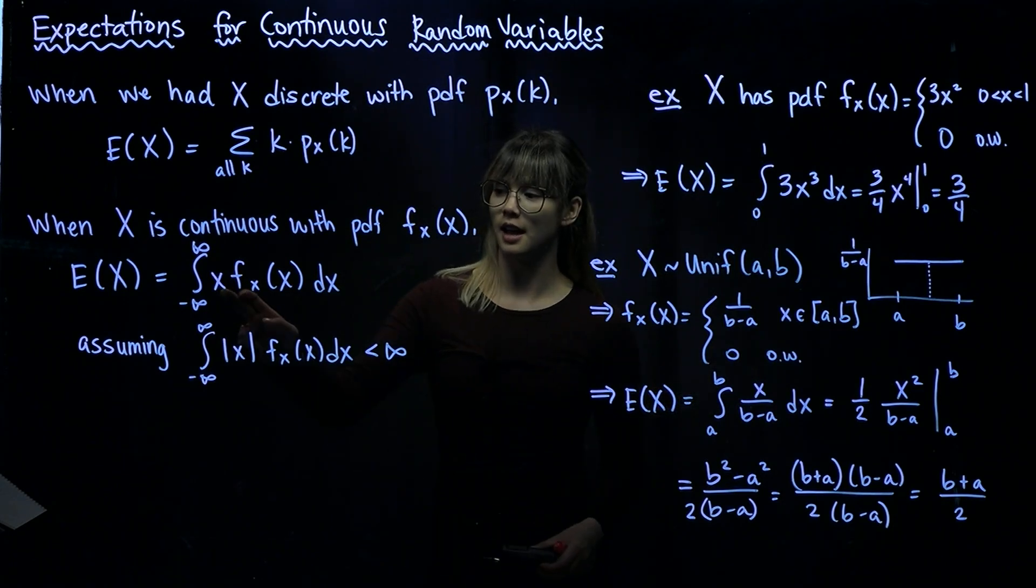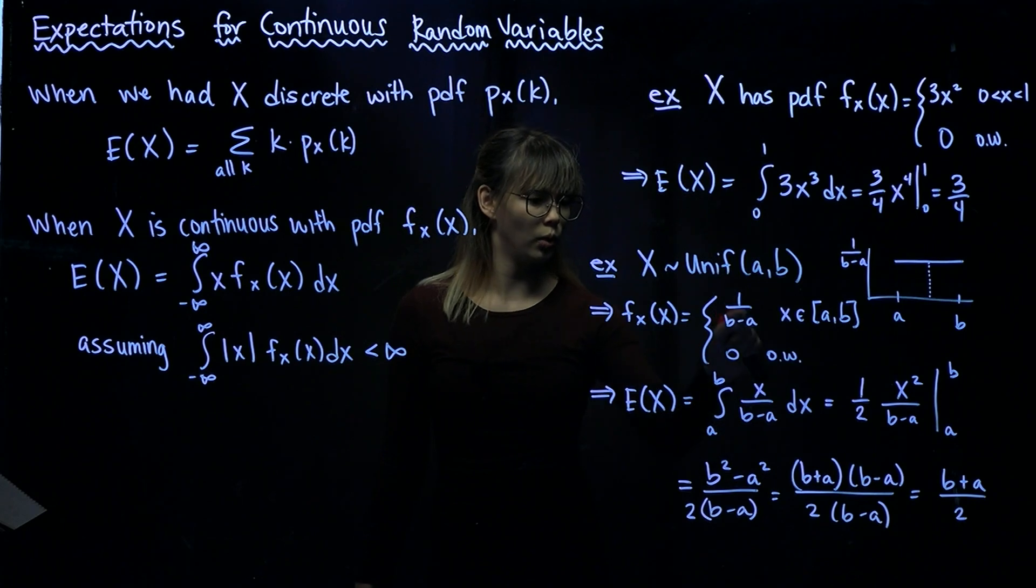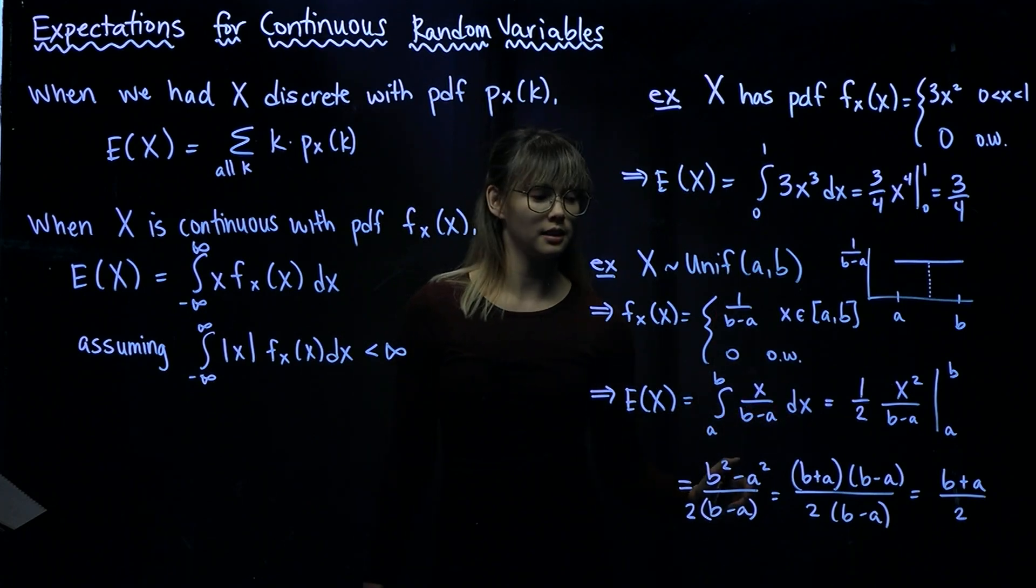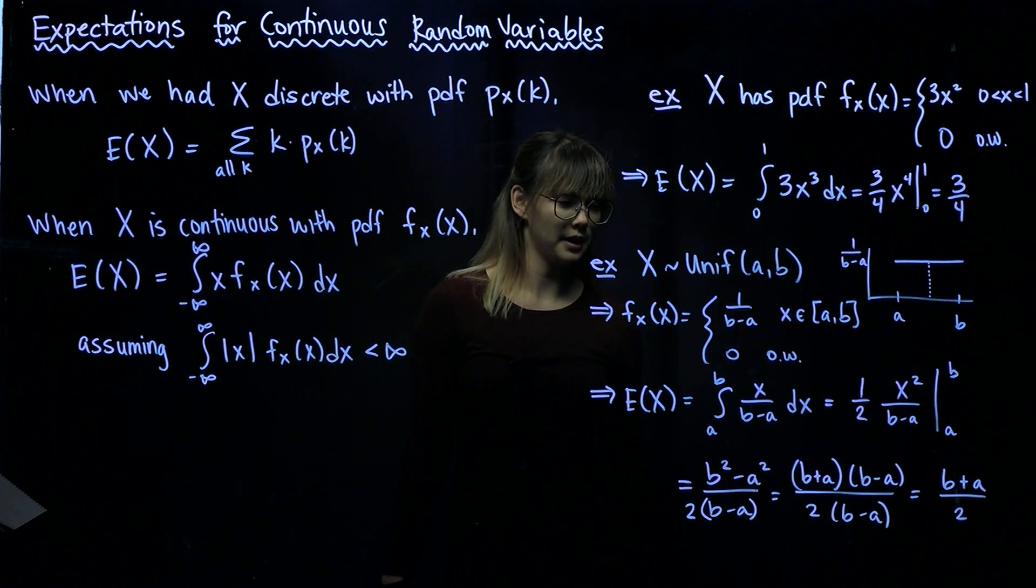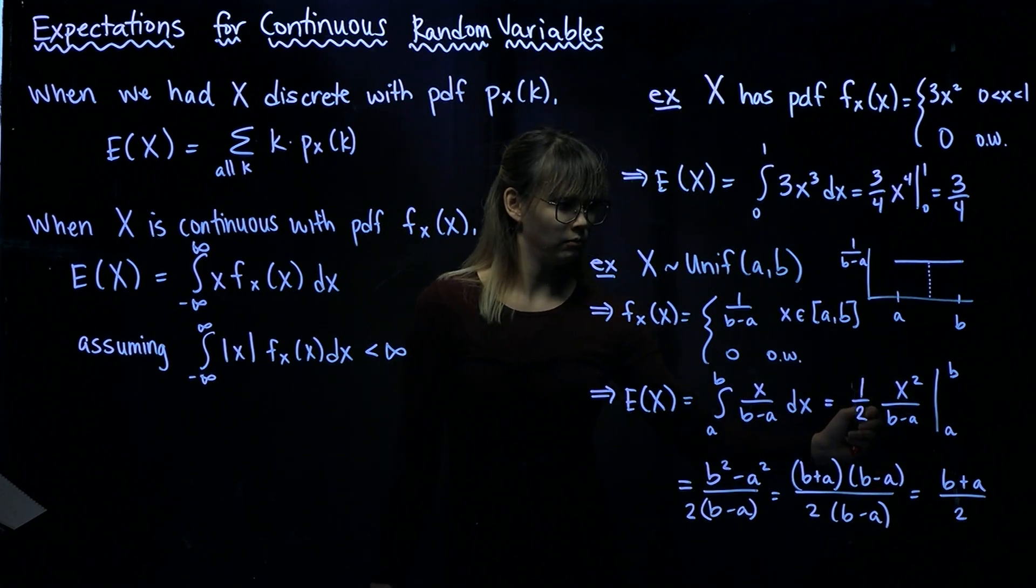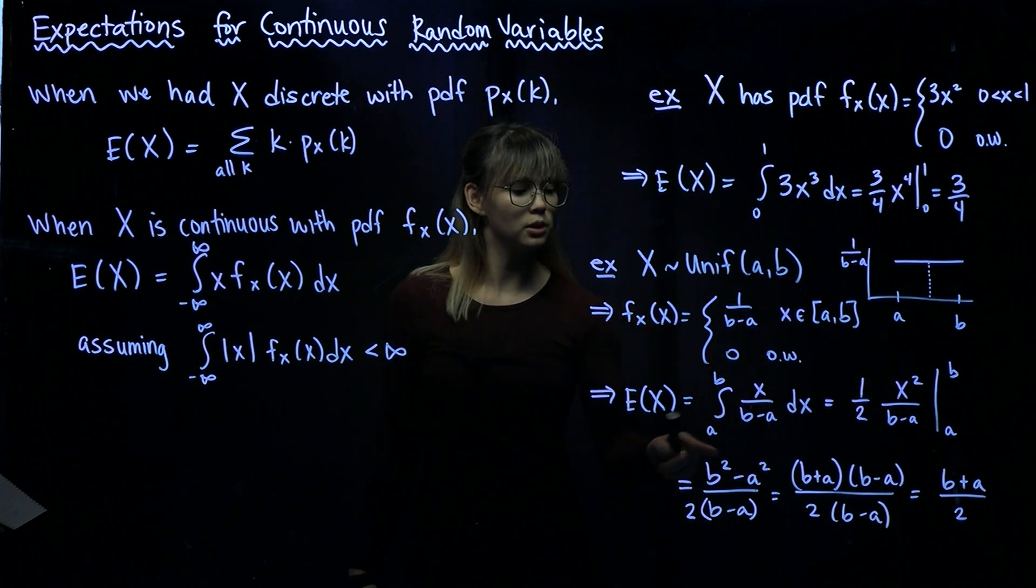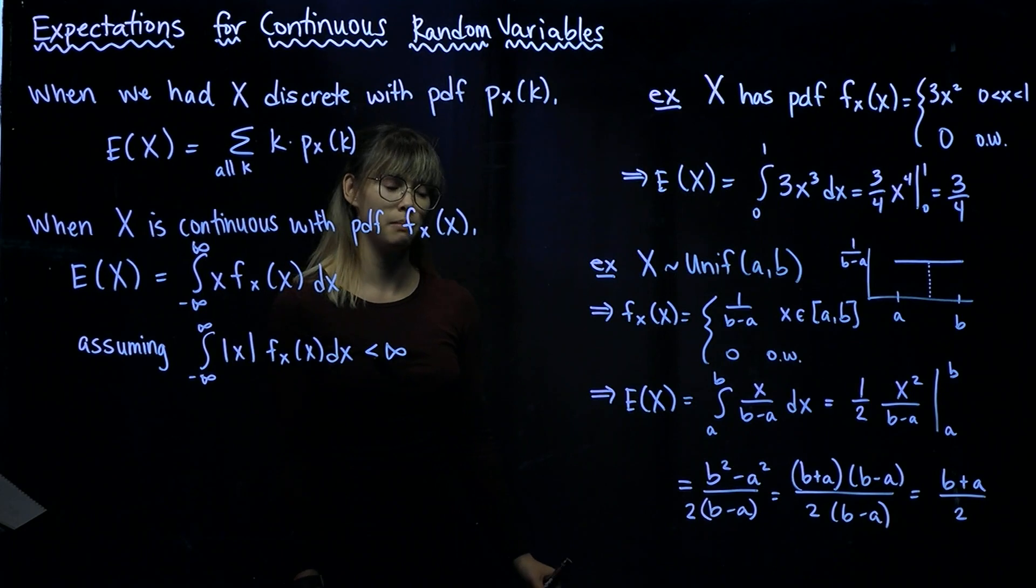So again, we take X times its PDF, so we have X times 1 over B minus A. And then integrate with respect to X. All right, do a little bit of calculus. We see this is equal to 1 half times X squared over B minus A. And we evaluate from A to B. So we go ahead and plug those in. We get B squared minus A squared divided by 2 times B minus A.